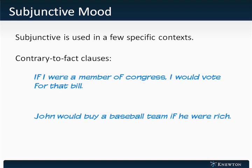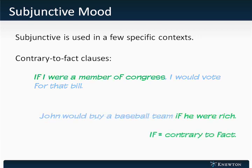There are two sentences here. The first reads: If I were a member of Congress, I would vote for that bill. The second reads: John would buy a baseball team if he were rich. The clauses that follow 'if' in both sentences are contrary to fact. I am not a member of Congress, but I want to talk about what I would do if I were one. And John is not rich, but if he were, he would sure buy a baseball team. The use of 'were' there is evidence of the subjunctive mood.